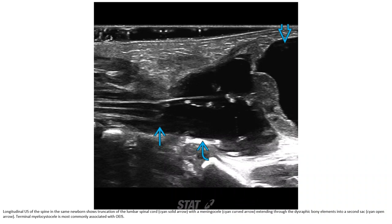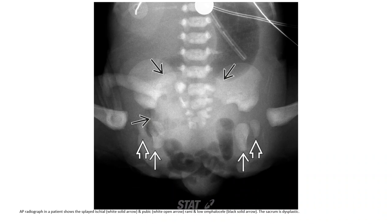Terminal myelocystocele is most commonly associated with OEIS. The AP radiograph in the patient clearly displays the ischial and pubic rami and a low omphalocele.